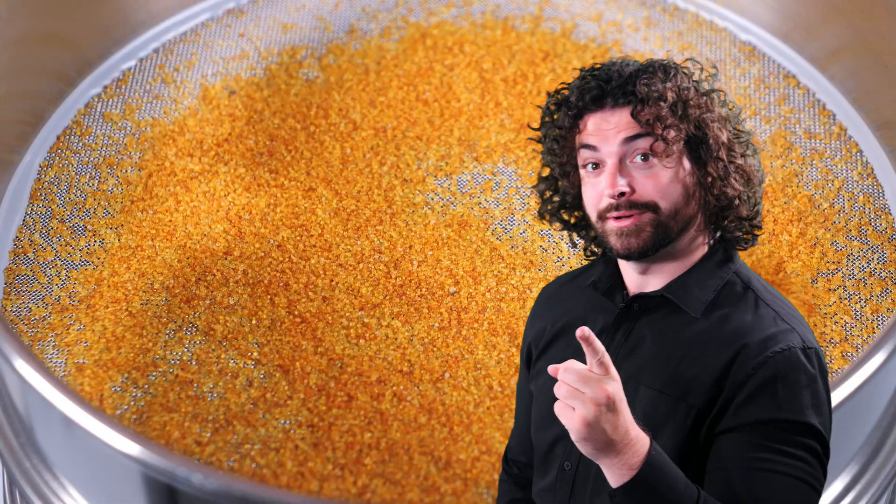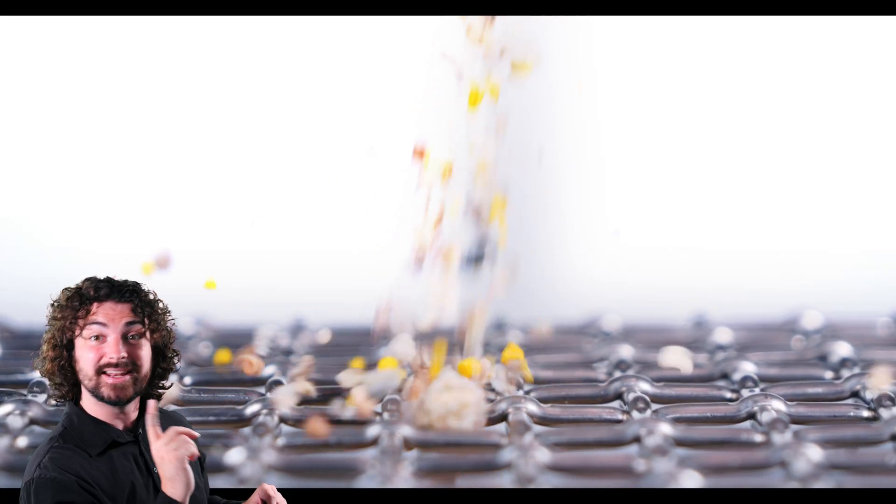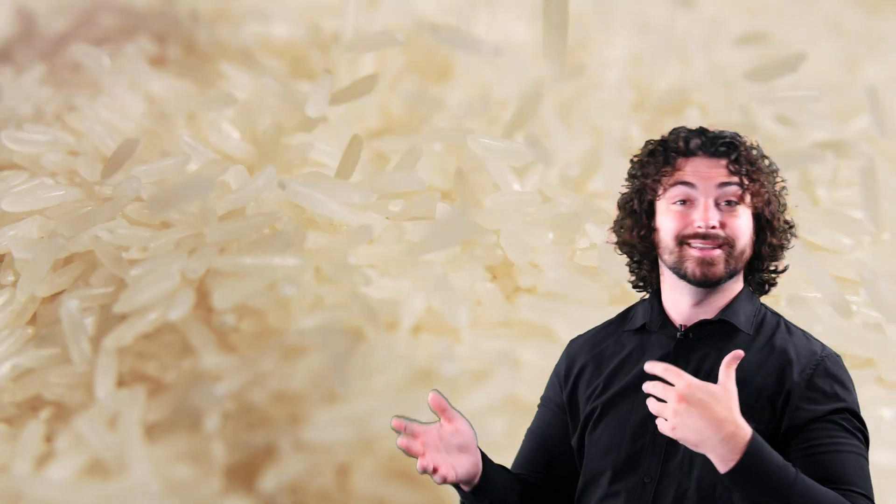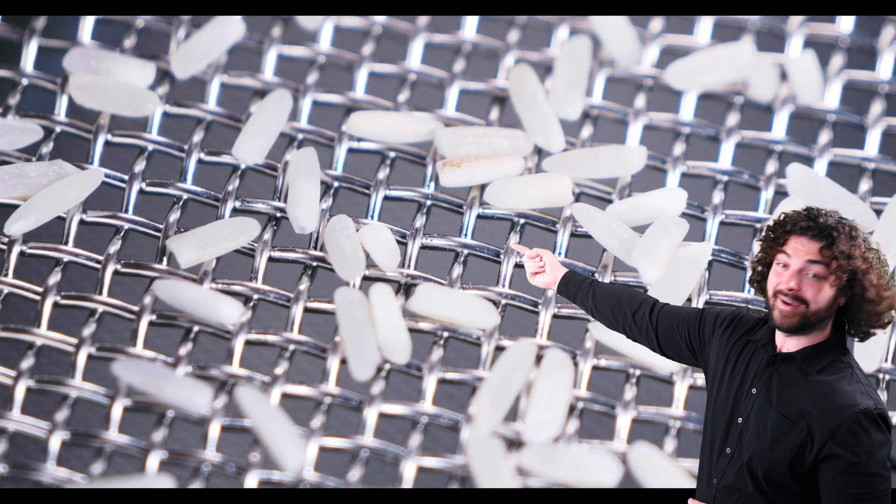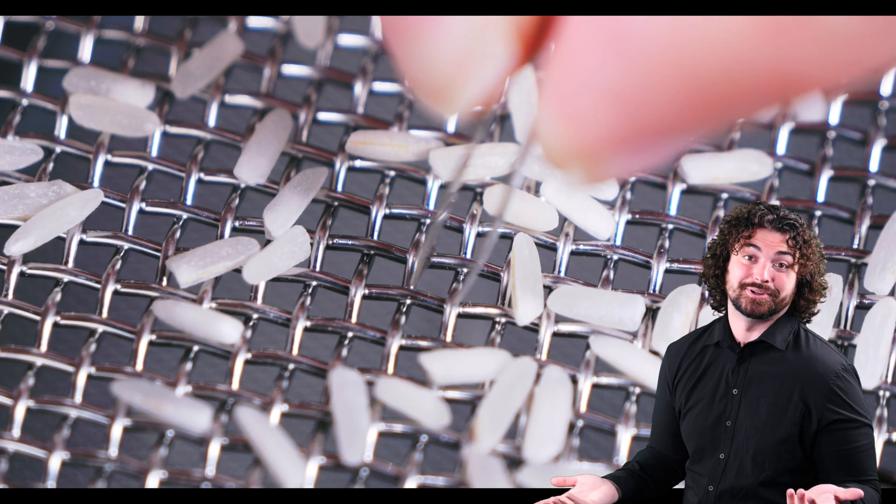And very importantly, square mesh gives a particle of any shape the best chance to find an opening. Using an oblong or broad aperture shape would only work well for ovoid or oblong shapes like rice. But rice can find an opening through a square opening, so it just kind of makes sense to standardize sieves for a square aperture.